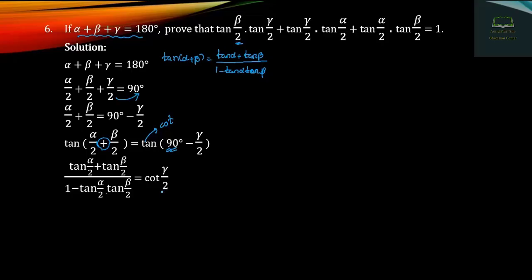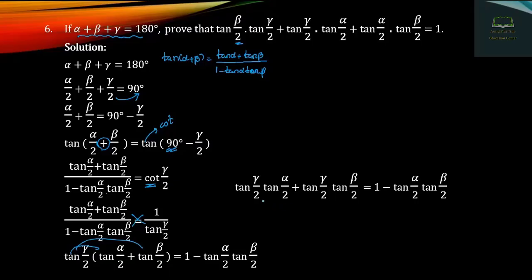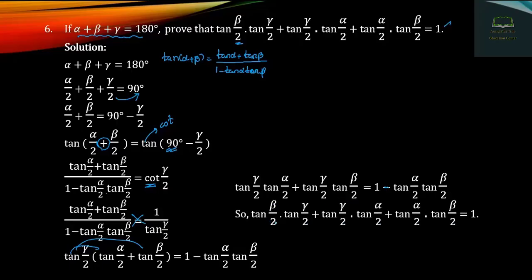Now entering the picture, we develop: tan(α/2) plus tan(β/2) into the formula. Going to distribution, d minus tan(α/2) into tan(β/2), gives us the result. Similarly, tan(β/2) into tan(γ/2) plus tan(α/2) into tan(β/2) equals 1, which completes the proof.